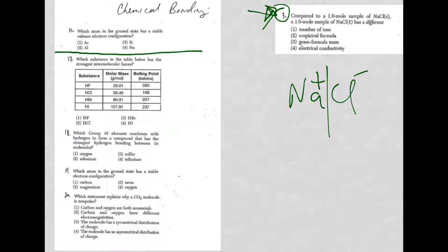In this case, it would be Na+ and Cl-, which means I have, in the case of a liquid, a substance that can conduct electricity, or in the case of a solution, a solution that can conduct electricity, and my answer is choice four.